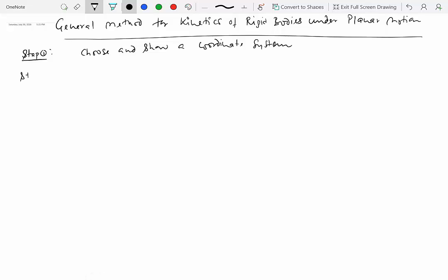Step two is to perform as much kinematic analysis as you can, and the goal is to find the acceleration of center of mass and the angular acceleration of the rigid body. So if you have one rigid body, you're trying to determine both of these quantities as much as possible.